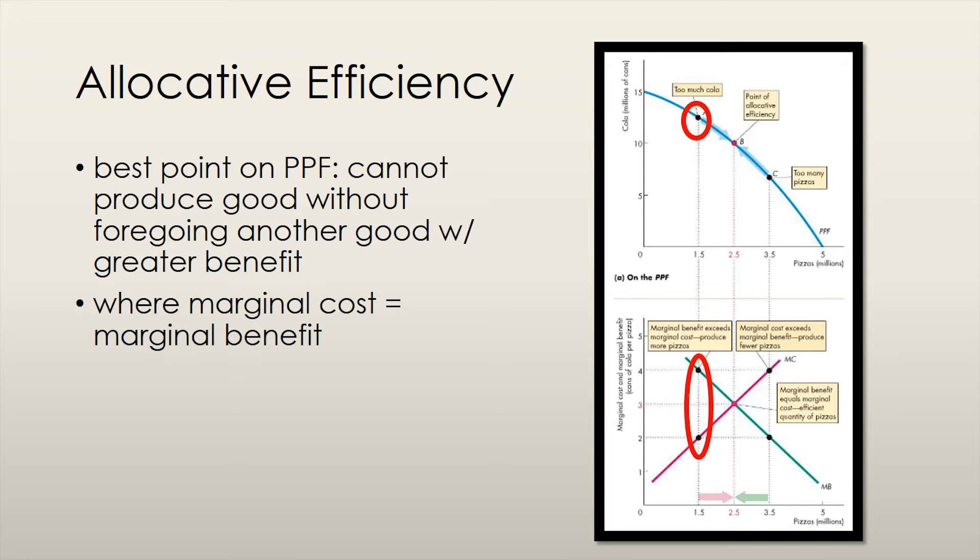In this first case, where we produce 1.5 units of pizza, the marginal benefit of producing pizza is greater than the marginal cost. This means that someone values that pizza, and is willing to pay for it, at a higher price than it costs to produce. We would get more value from our resources if we were to produce more pizza and less cola.